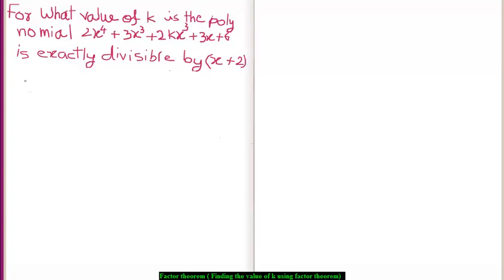In the given example, we will find the value of k in the given polynomial using factor theorem. Now here, let f be equal to the given polynomial, that is, 2x to the power 4 plus 3x cubed plus 2kx cubed - this k, the value of this k we need to find - plus 3x plus 6.